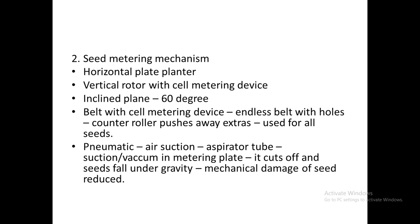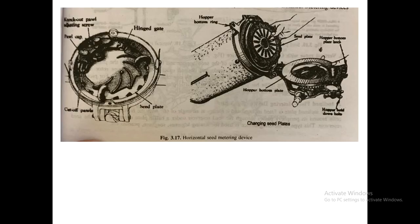The pneumatic type of metering mechanism is very efficient and reduces mechanical damage to seeds. An air suction aspirator component keeps the metering plate under vacuum, causing seeds to be sucked onto the plate. As the metering plate rotates to a position where the vacuum is cut off, seeds fall under gravity from the rotating metering plate into the seed tube.